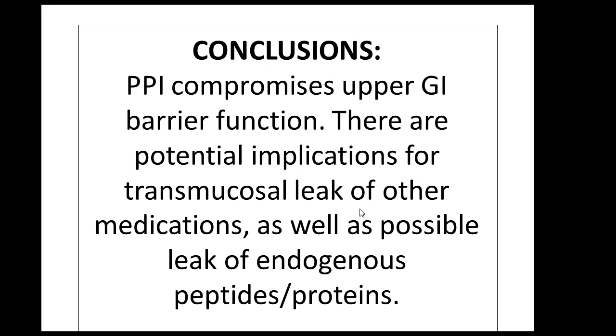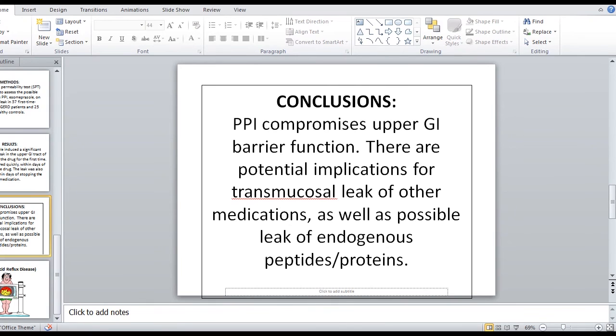Conclusion is also fascinating. PPI compromises upper gastrointestinal barrier function. I want to bring your attention to this, the last portion of the sentence. When the gastrointestinal tract is compromised, it's possible that endogenous protein peptides will leak into the blood. But what that means is, let's go to the blackboard, and I will explain you in details.